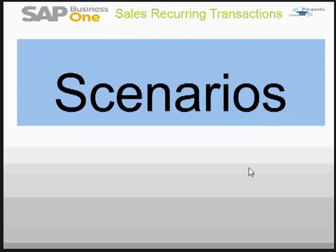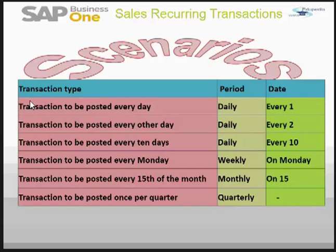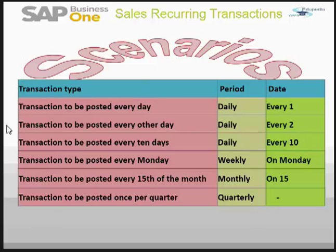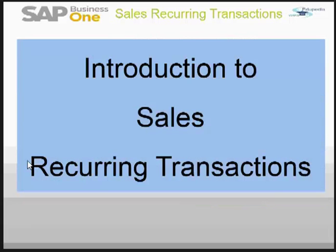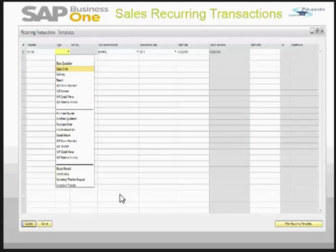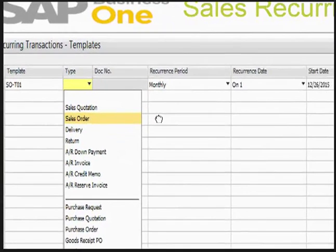Let's see about the scenarios of a recurring transaction with respect to sales. The transaction type can be daily, every other day, within every 10 days, on every Monday, on the 15th of the month, or once per quarter. The system does not limit you to only Monday — that is just an example we will be seeing in the coming slides.